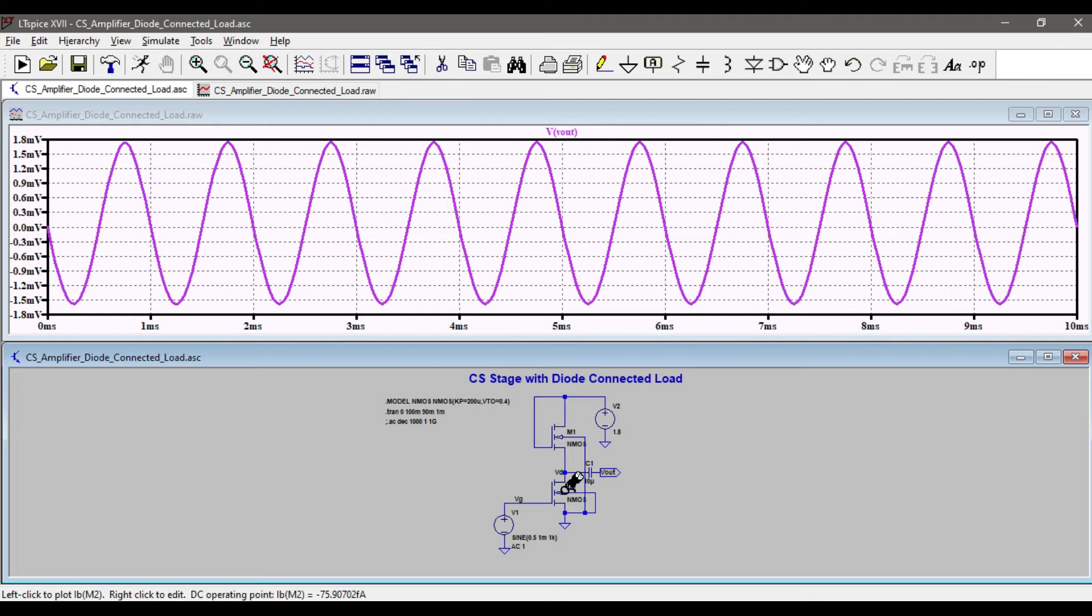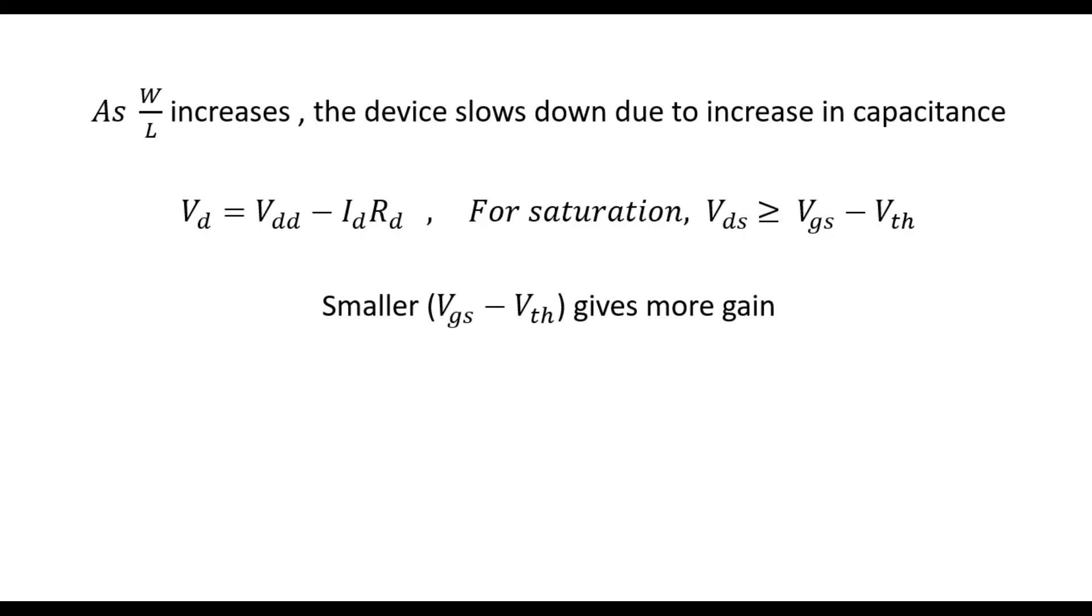Our equation says W by L ratio of this MOSFET and this MOSFET gives me the gain, but this is not happening. The reason is same as the previous case topologies. As we increase the gain of the NMOS, the device slows down. We must remember that if the W becomes larger and larger, the device becomes larger and larger, that means it becomes wider and wider, and this increases the capacitance.